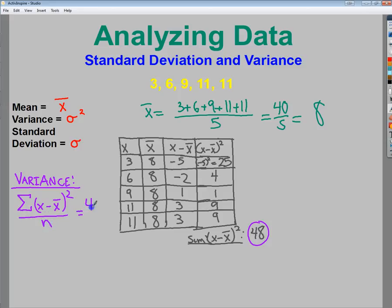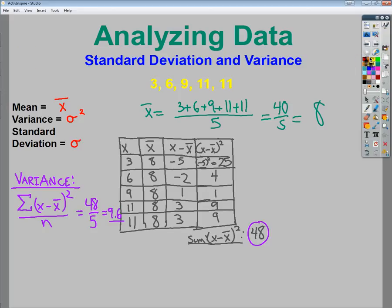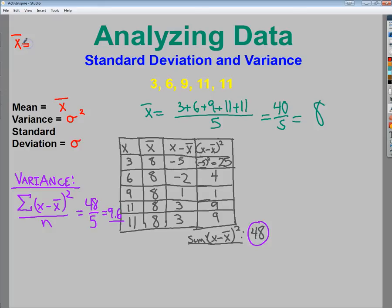So, in this case, it would be 48 divided by 5. And, 48 divided by 5 is 9.6. So, there's my sigma squared, or my variance. So, if I was going to write the components of this one specific problem up in the corner in a convenient place, I'd say that the mean is 8. Sigma squared is equal to 9.6.